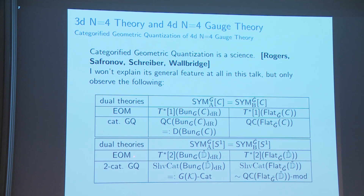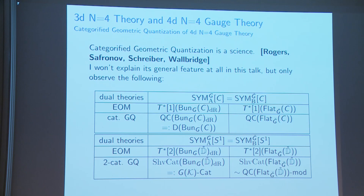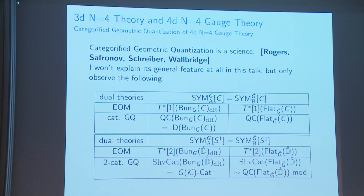In the naive sense, it goes as follows. You identify the equations of motion on a curve C in the 4D theory as 1-shifted symplectic, and can identify it as T*[1] of the de Rham stack of Bun_G and T*[1] of the flat moduli. In usual geometric quantization, when you have a cotangent bundle, you get the Hilbert space by taking functions on the base. In categorified geometric quantization to get something like a 3D TQFT, you take sheaves on the base.